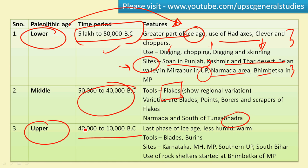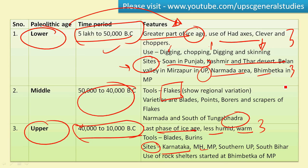The Upper Paleolithic culture, the last phase, dates from 40,000 to 10,000 BC. This is the last phase of the ice age, and it was less humid and warmer compared to the other two phases. Tools include blades and burins. Sites are found in Karnataka, Maharashtra, Madhya Pradesh, southern UP, and south Bihar. The use of rock shelters started in this phase, and at Bhimbetka in Madhya Pradesh we find beautiful rock paintings from the Upper Paleolithic and Mesolithic ages.